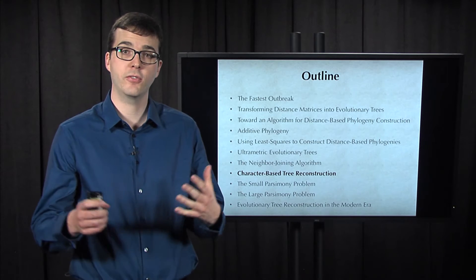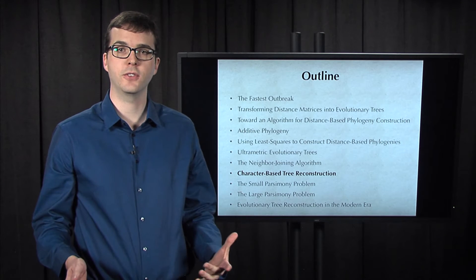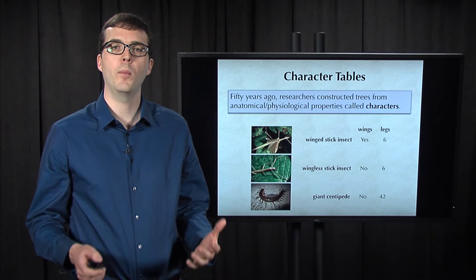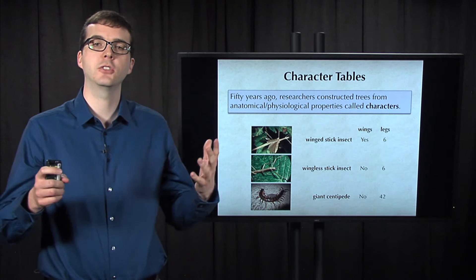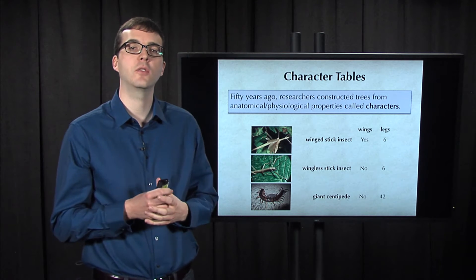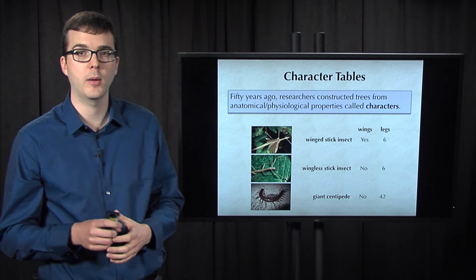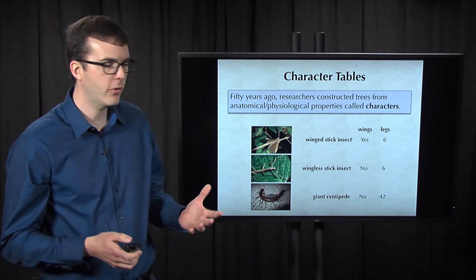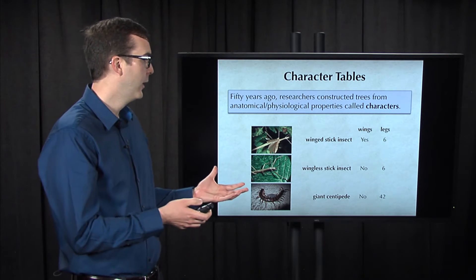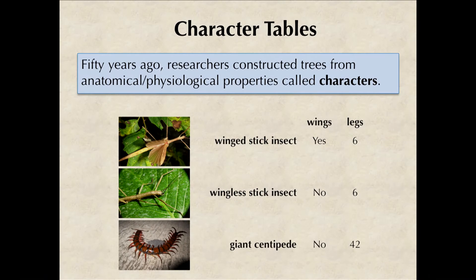Before we discuss how to infer ancestral states, I will pause to mention that half a century ago, biologists constructed trees from anatomical and physiological properties called characters. For example, here's a toy character table for three species, where the two characters considered are whether the species have wings or not, and how many legs the species have.